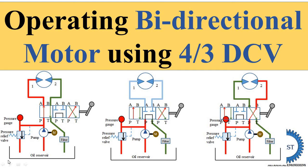In this video, I explain operating bidirectional motors using a 4x3 DCV. It is a circuit design used for hydraulic systems as well as for pneumatic systems. First, there are three different positions. Here you see this image — first position, mid position, and second position. I will explain all these positions using animation as well as the directional control valve animation, so you can easily understand and clear your concept.